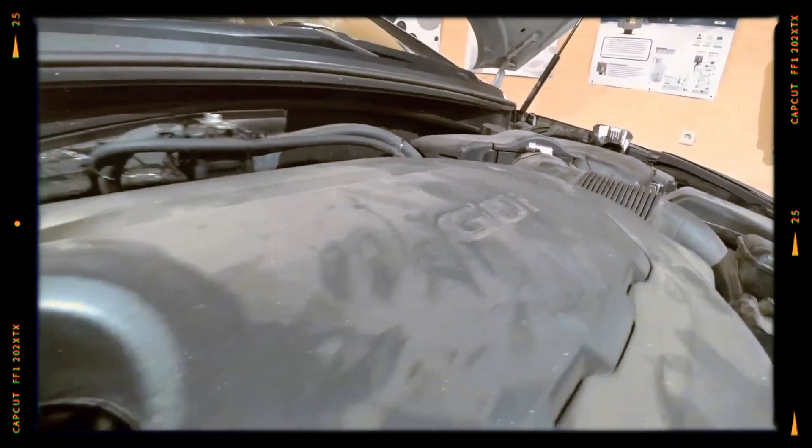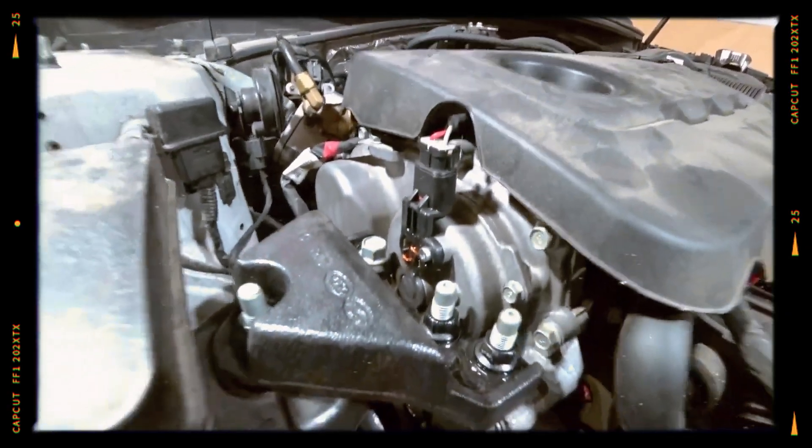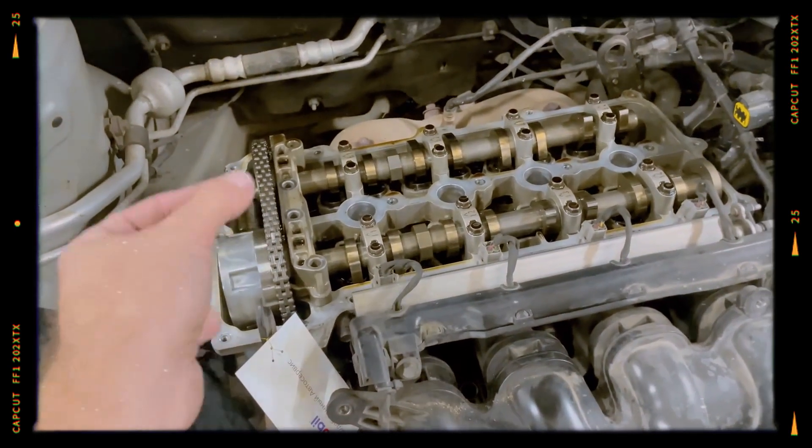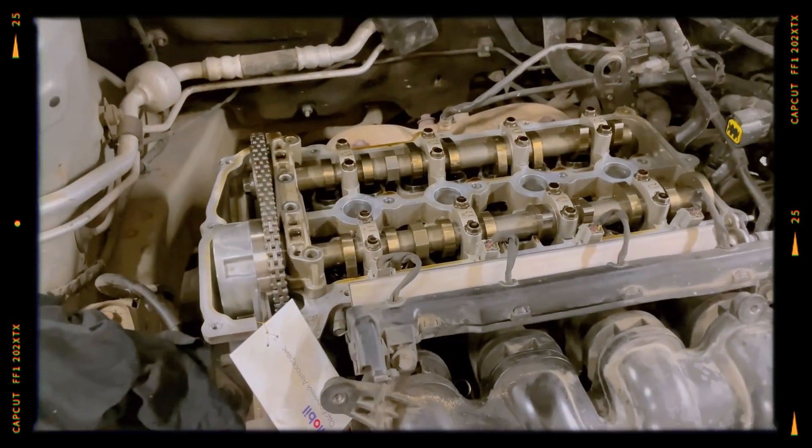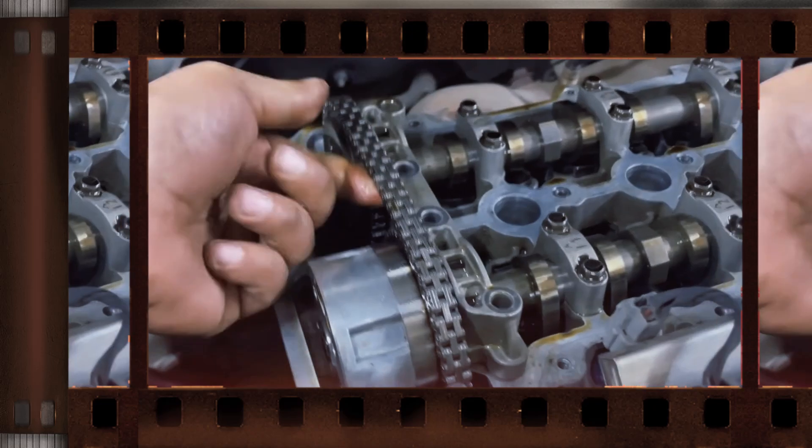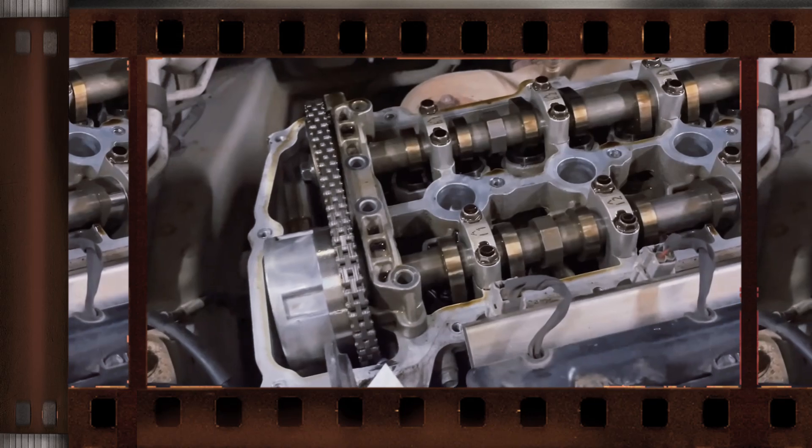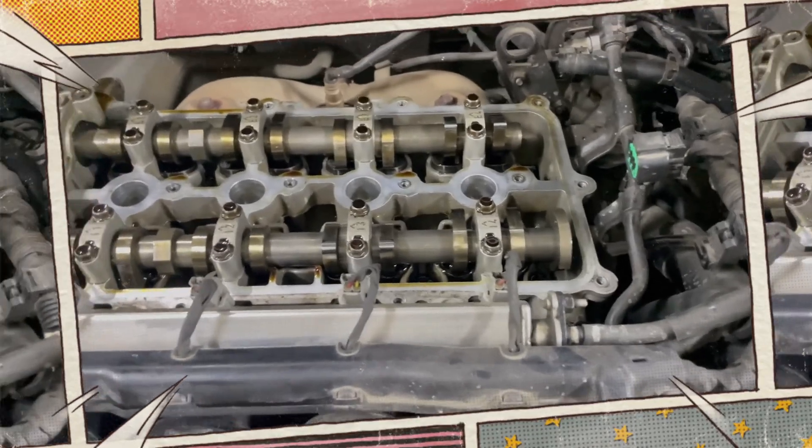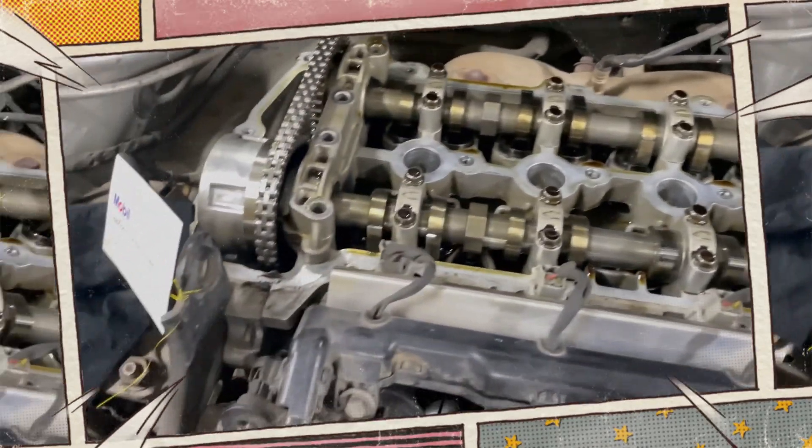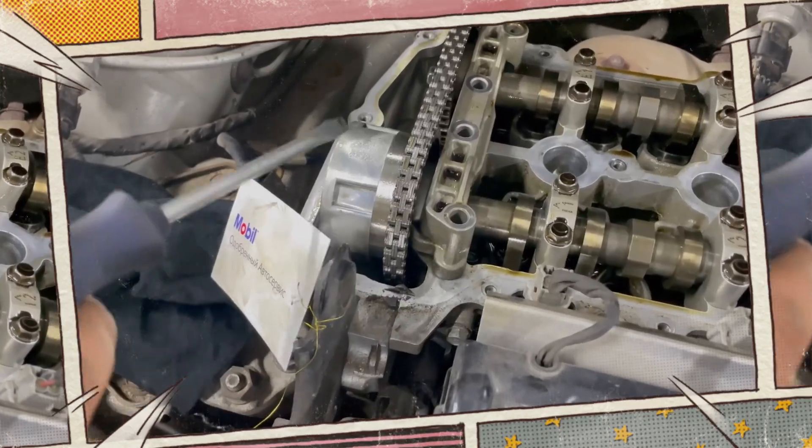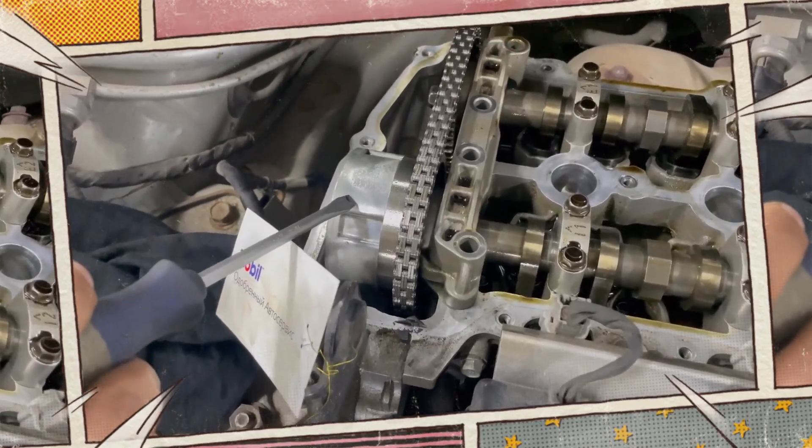The electric intake phaser introduced in 2015 lets the ECU control cam timing at idle for lower emissions. But early units leaked oil into the motor housing or wore out carbon brushes. Symptoms include rough idle, P0011 or P0014 codes and metallic ticking. Replacement with the revised phaser post-2016 build resolves the issue.